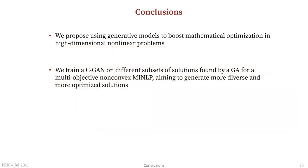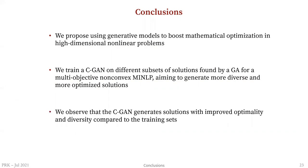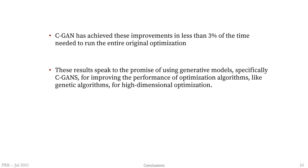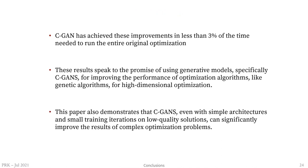In conclusion, we propose using generative models to boost mathematical optimization for high-dimensional non-linear problems. We trained a CGAN on different subsets of solutions found by a GA for a multi-objective non-convex MINLP, aiming to generate more diverse and optimized solutions. The CGAN generated solutions with improved optimality and diversity compared to the training set, and achieved these improvements in less than 3% of the time needed to run the entire original optimization. This shows that CGAN, even with simple fully connected architectures and small training iterations, can significantly improve results on complex optimization problems.